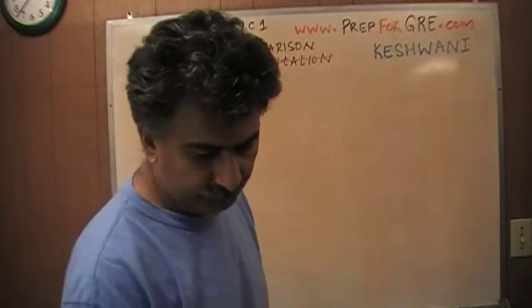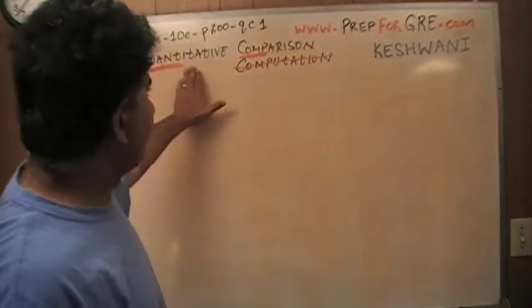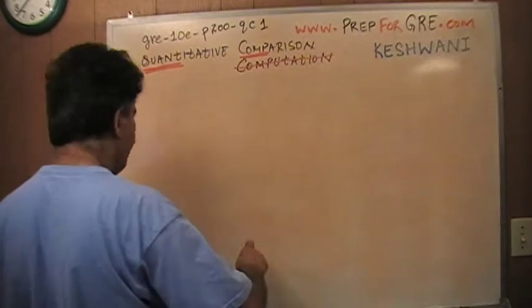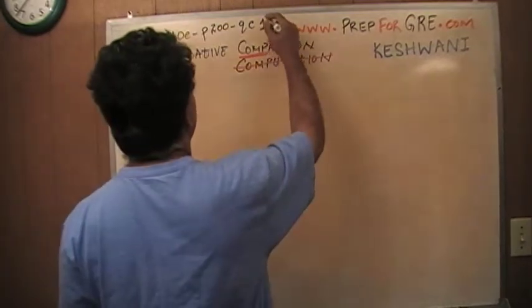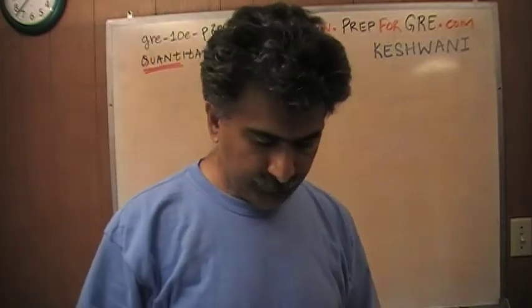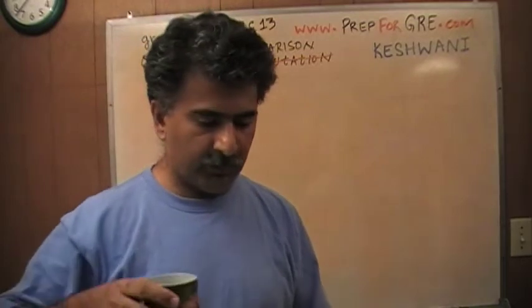The problem that I am about to solve is the one you're going to find on page number 200. Quantitative comparison question number 13. Number 13 is a pretty straightforward problem. About 62% of people who took the exam had no problem with it, they got it right.